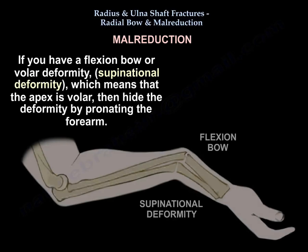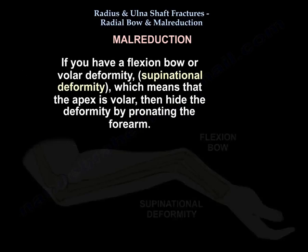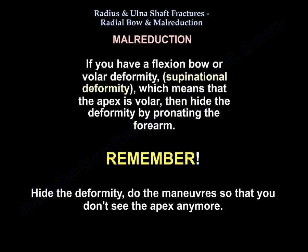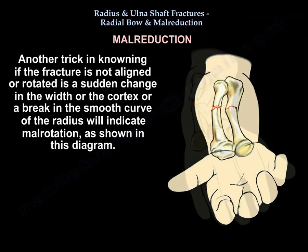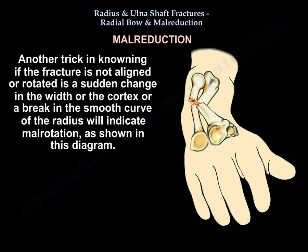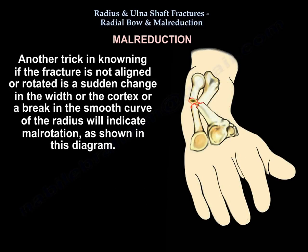If you have a flexion bow or volar deformity — called a supinational deformity — where the apex is volar, then hide the deformity by pronating the forearm. Just remember: hide the deformity by doing the maneuver where you no longer see that apex. Another trick in knowing if the fracture is not aligned well is a sudden change in the width of the cortex.